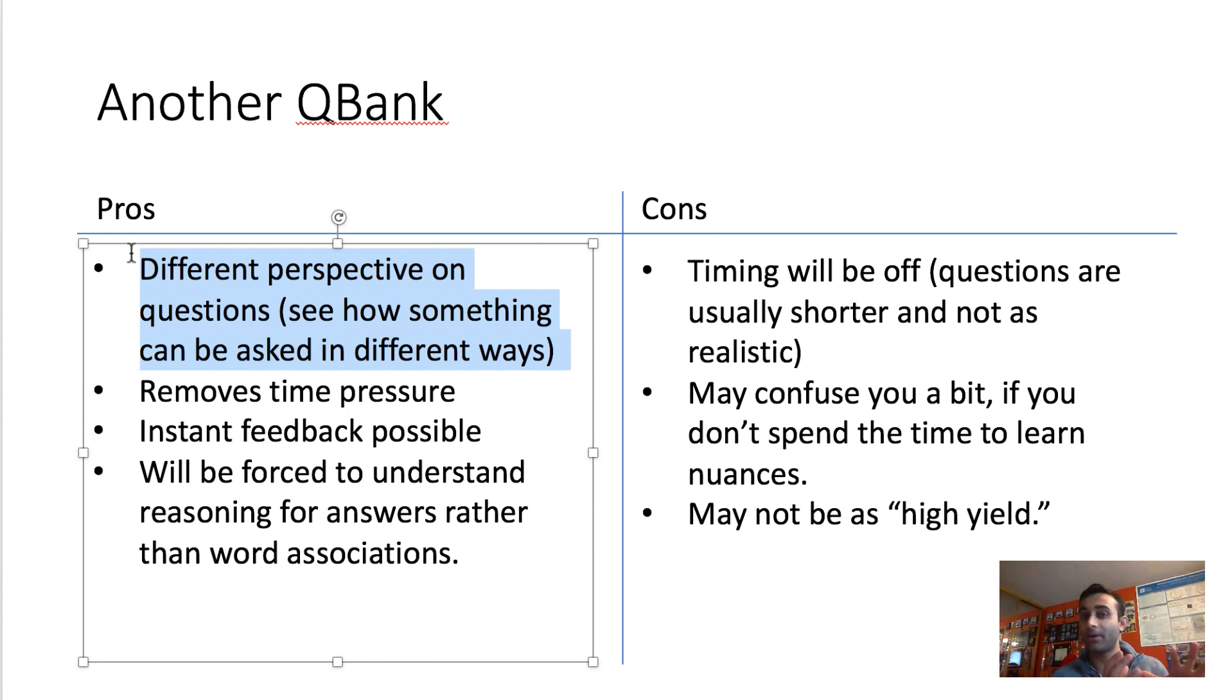For example, I remember multiple questions in Amboss and Kaplan that would hint on the same concepts that were tested on UWorld, but ask it in a completely different way. And the good part about that is that now I was attacking questions from all the different angles. So on come test day, you know, this question is about tertiary syphilis, but it can also be asked in this way. It can be asked in this way.